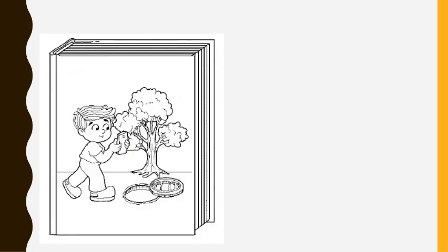Now children, let us study the illustration on the cover of this book. What can you see? There is a boy walking who is too focused on his phone. We can also see that there is a manhole on his way. Now, based on the illustration, what do you think will happen next?